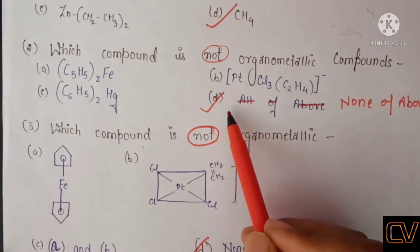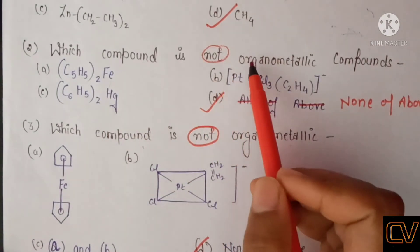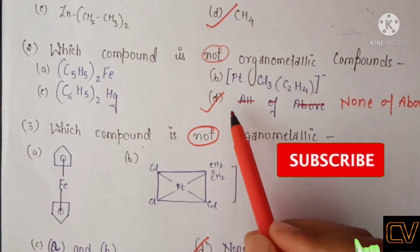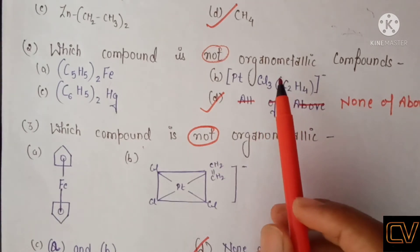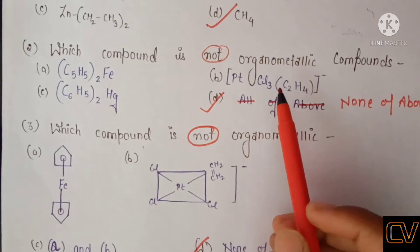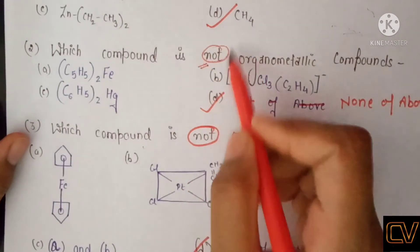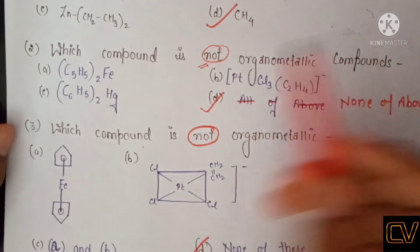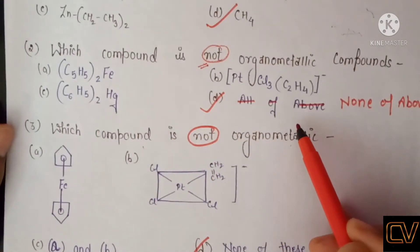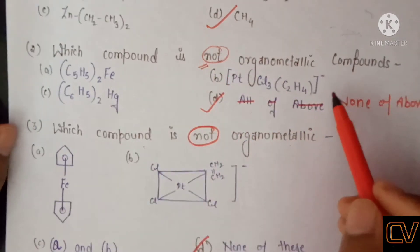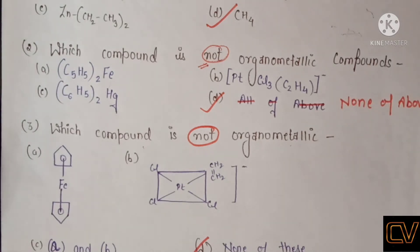The correct answer here will also be option D — none of the above. Why? Because all three options A, B, and C are organometallic compounds, but the question asks which is NOT organometallic. So option D is correct. One important tip for your exam: always read the question very carefully first, only then give your answer. Many students miss the word 'not' in the question and answer incorrectly. Make sure you go through the question thoroughly so there is no chance of getting it wrong.